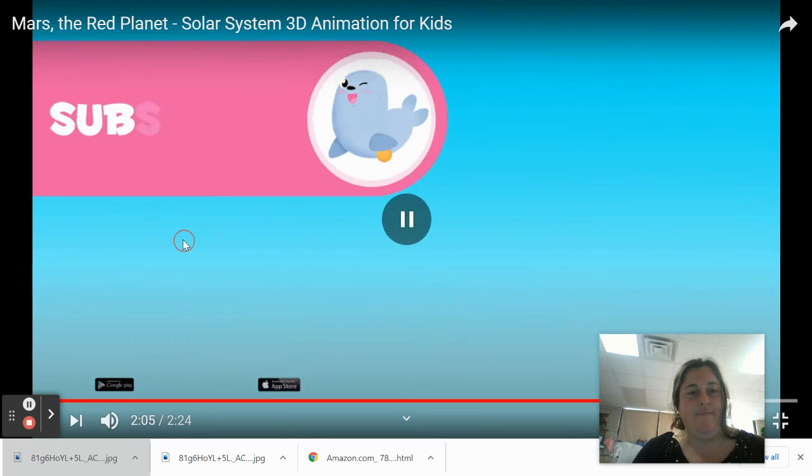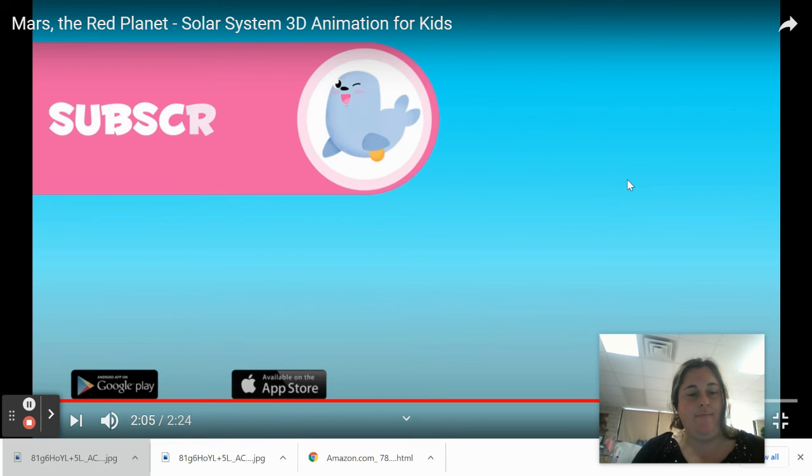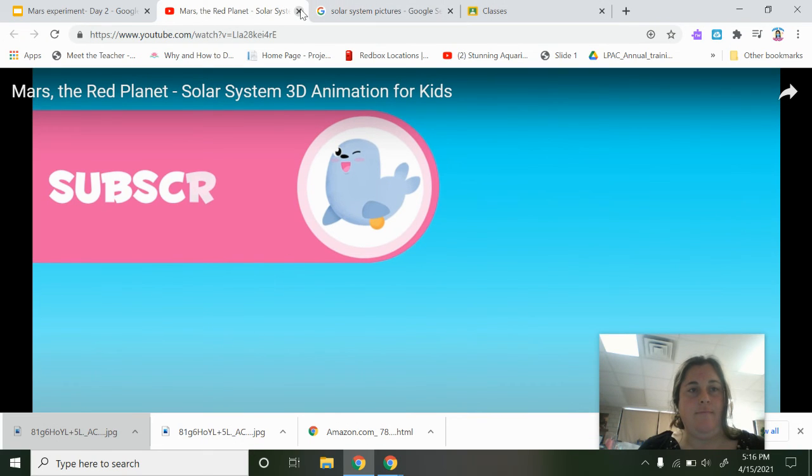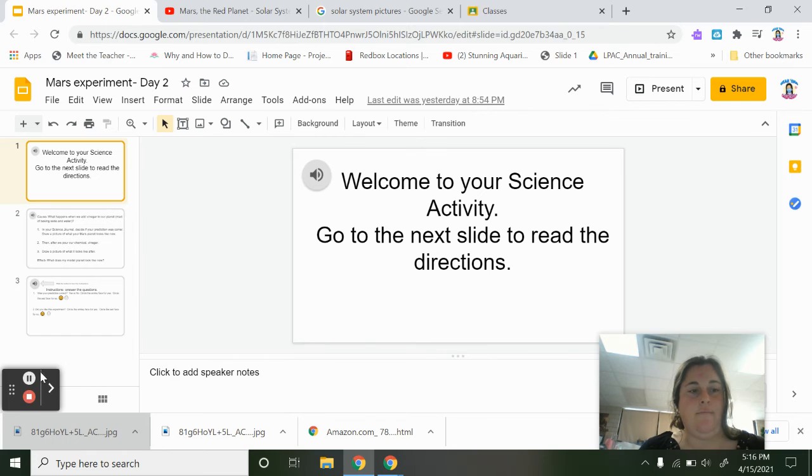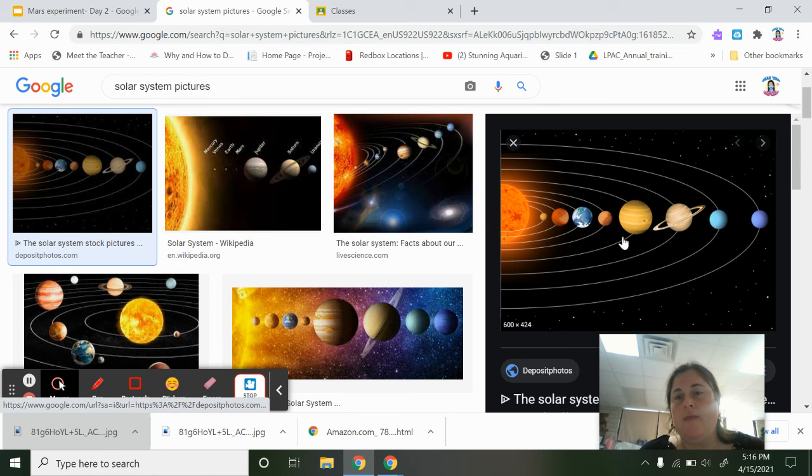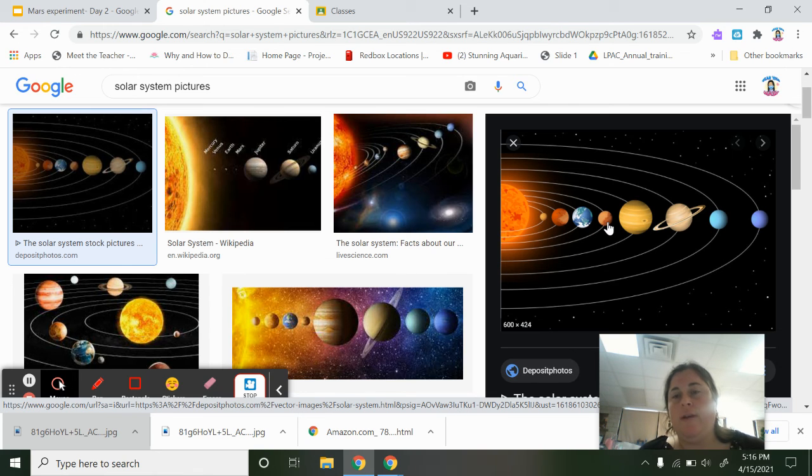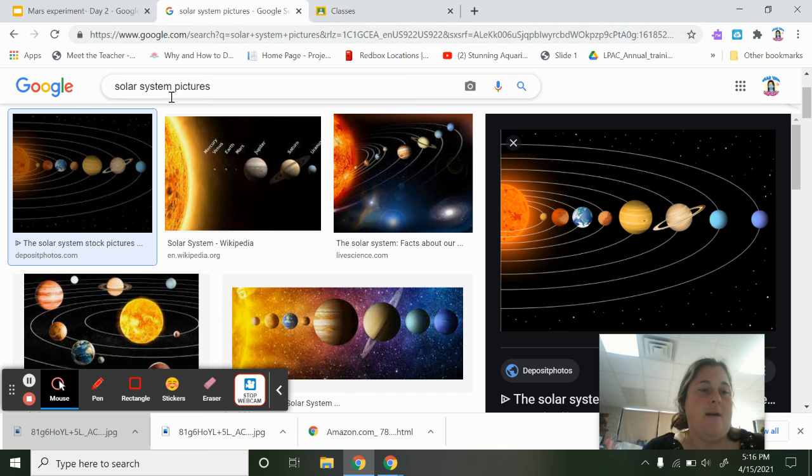All right. And I wanted to show you this picture. So, this is the Sun. And then, one, two, three, four. Mercury is fourth from the Sun. So, we're closest to Earth. So, not we are. We are on Earth. We are Earthlings. Mars, the planet Mars, is closest to Earth. That's us. Okay. All righty.